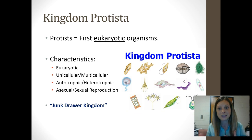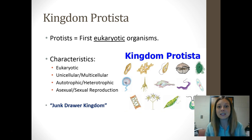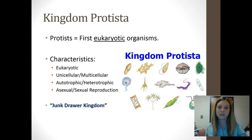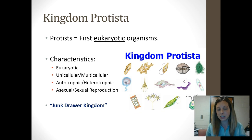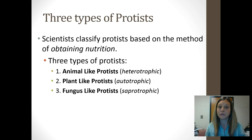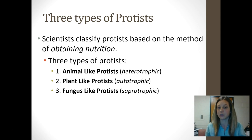Some can reproduce both asexually and sexually. We call this kingdom the 'junk drawer kingdom,' which is an appropriate nickname because just like your junk drawer at home, these organisms don't really fit anywhere else, so we sort of shove them into a kingdom altogether. There's a lot of conversation about whether they should be split into further kingdoms, because there are three major categories of protists based on how they obtain their nutrition.